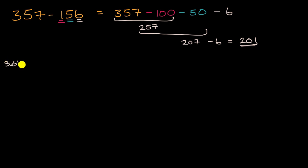So let me write this out. So let's say you wanted to subtract six from both. What would this be? Well, 357 minus six, well, we're just going to take six ones away from the seven ones here, so it's going to be 351 minus 156 minus six. Well, that just gets us to 150.